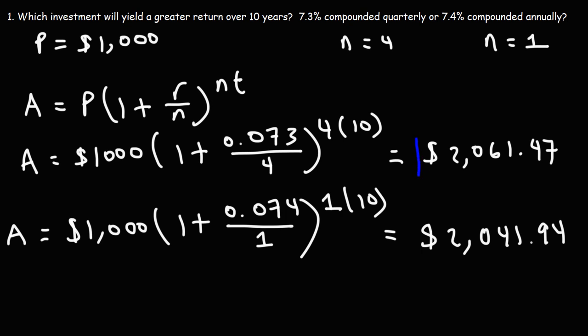So $2,061 is higher than $2,041, by a difference of $20, approximately. So notice that even though we have a lower interest rate, we still receive a higher rate of return because N is higher. It's compounded quarterly instead of compounded annually. So in this case, 7.3% compounded quarterly will yield a greater return over 10 years versus 7.4% compounded annually.